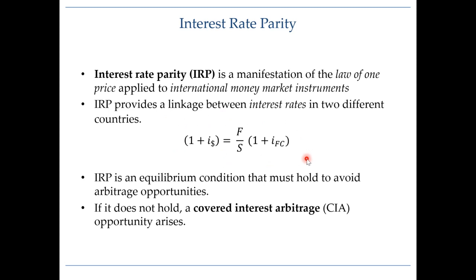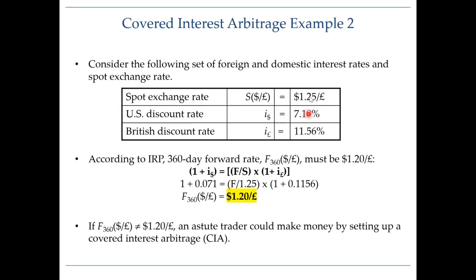We have a separate video that shows how we derive interest rate parity, and we also have another covered interest arbitrage example video, so make sure to watch those if you're interested. These numbers were the ones used in our previous example, so we are going to keep using them here as well. We have a spot rate between pound and dollar of $1.25 per pound, a US interest rate, and a UK interest rate.